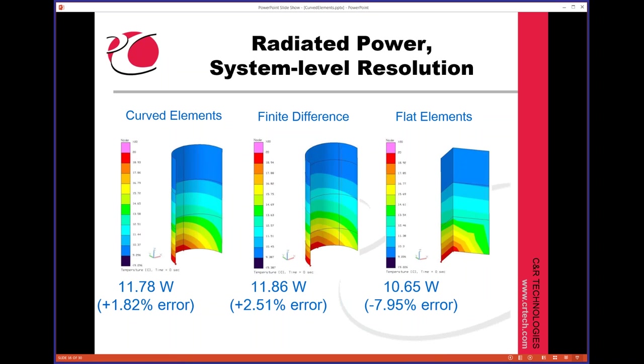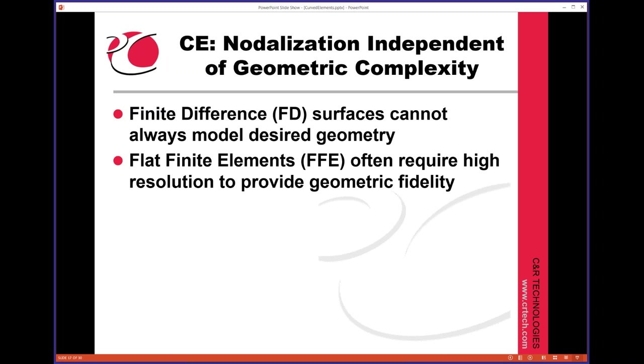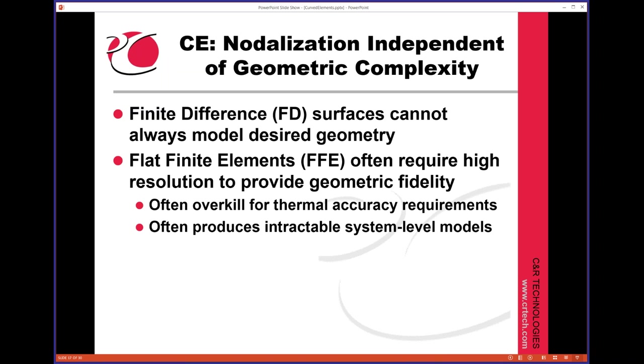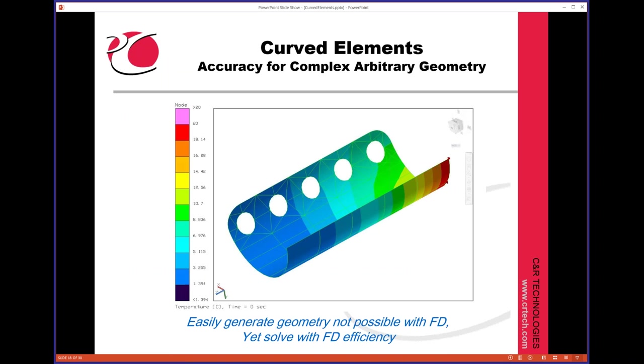So that's the main idea here. Our finite difference surfaces, you can't always model the geometry you want. Finite elements are great for arbitrary modeling, but you often need a lot more than you really need. The idea here is that you can pick your nodalization that matches your finite difference-like nodal density that you want to use.